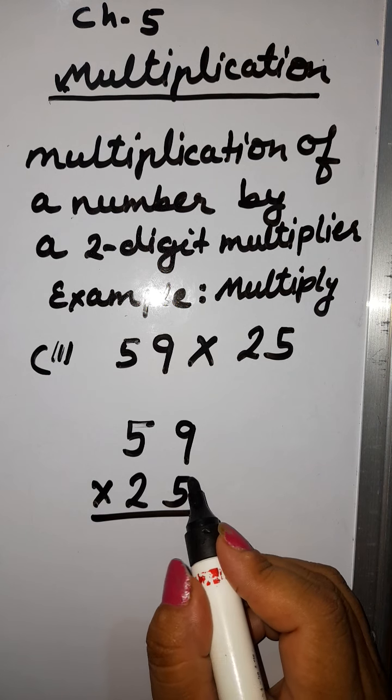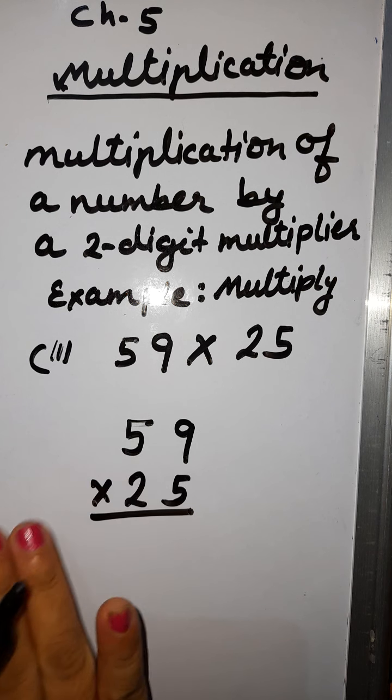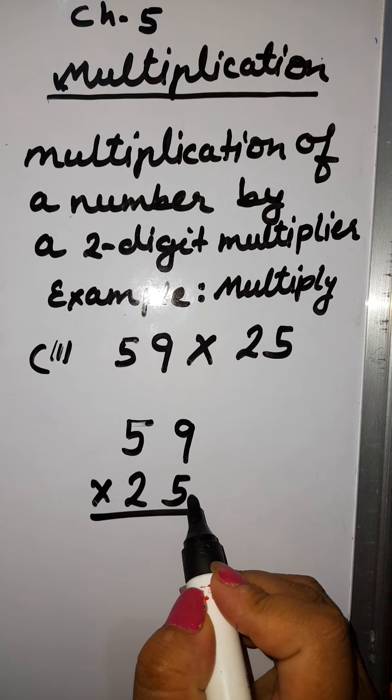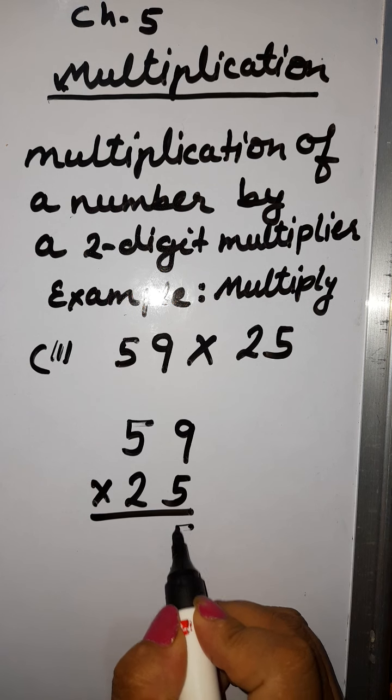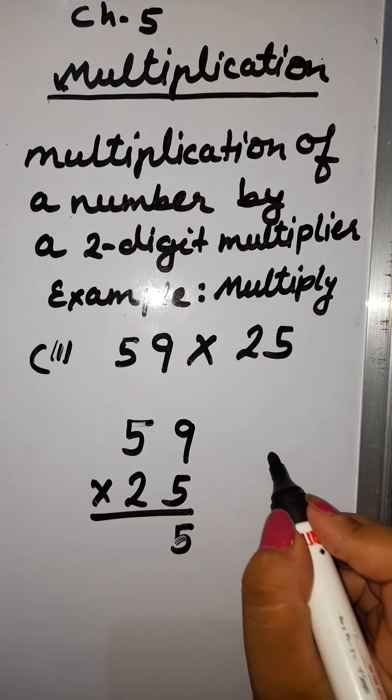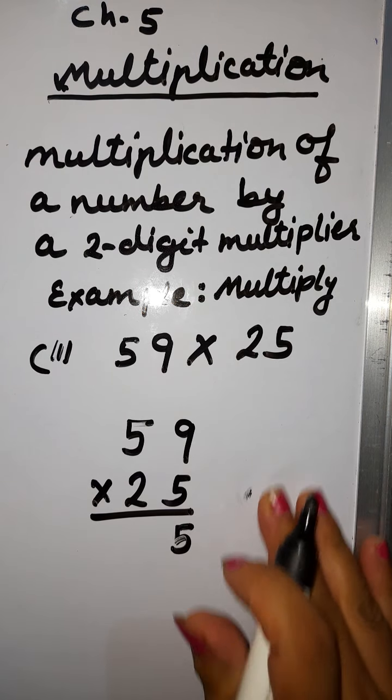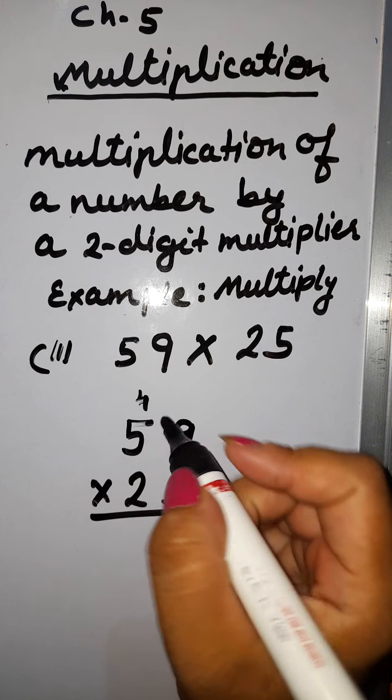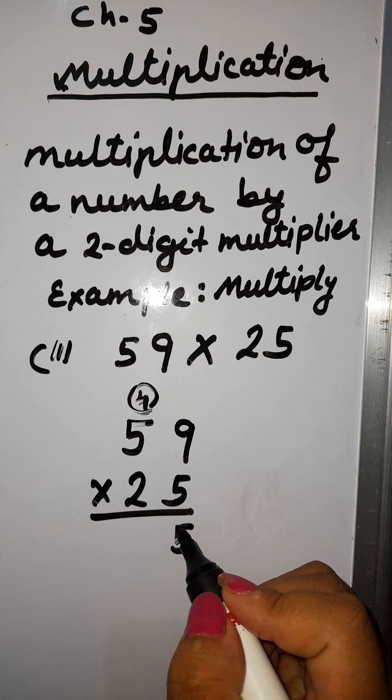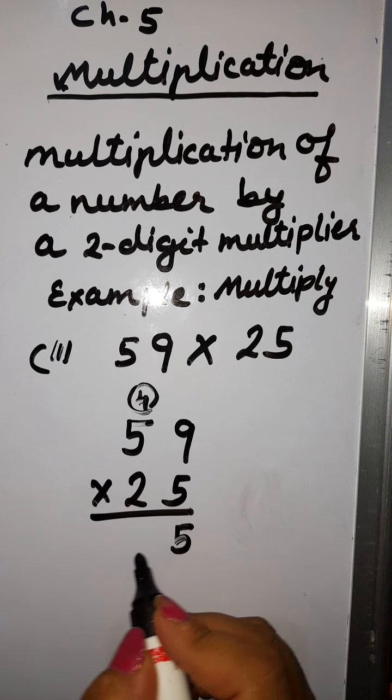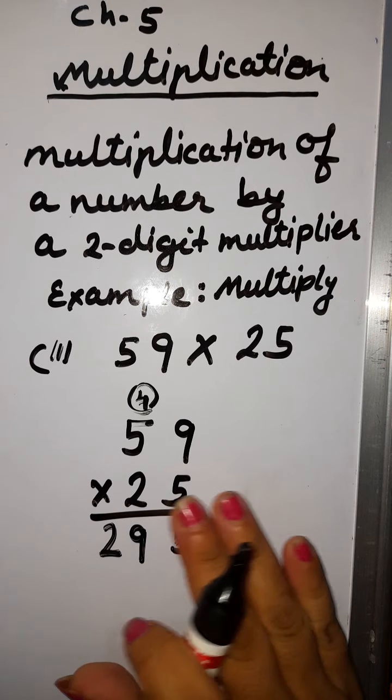Similarly, we will start the multiplication from ones place. So just hide it. 59 multiplied by 5. So first we will multiply it by 5. 5 nines are 45. We will write here 5 and 4 will be... just write here and circle it. 5 fives are 25. 25 plus 4, 29. So we will write here 29. Now it is solved.